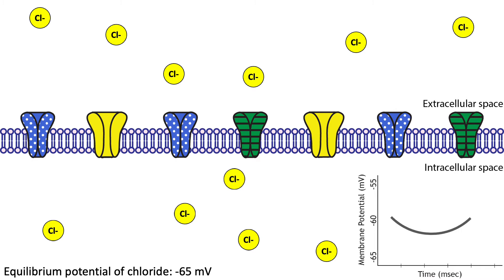An IPSP decreases the likelihood a neuron will be able to fire an action potential, which makes this ion flow inhibitory. Therefore, an IPSP is an inhibitory change in the membrane potential of a post-synaptic neuron. Like an EPSP, an IPSP is also typically brief, and the membrane potential will return to rest if no additional stimulation occurs.